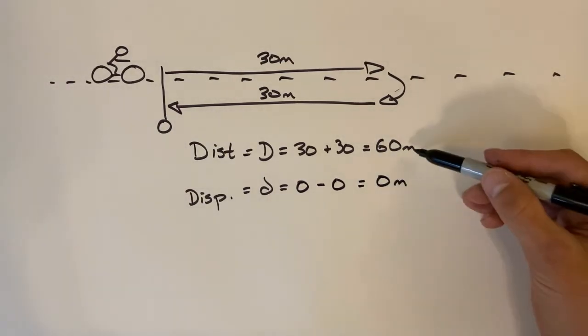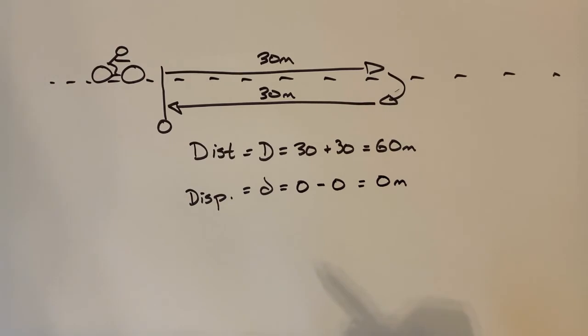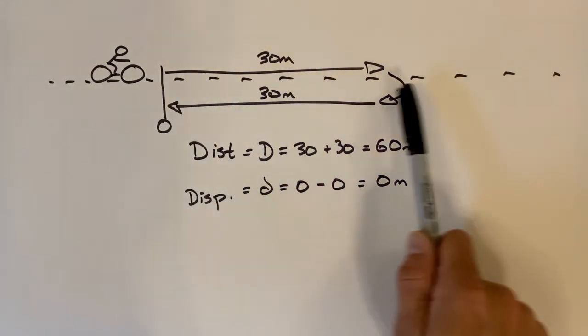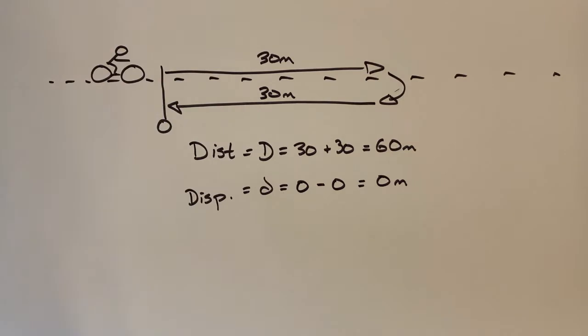So you can see pretty quickly here, the distance and displacement are not the same. Now if I said the displacement is zero, does that mean the ATV didn't go anywhere? Absolutely not. The ATV most definitely went this way, turned around, and came back. When we talk about displacement, all we care about is the change from beginning to end.